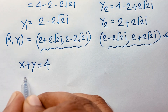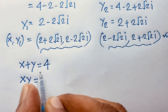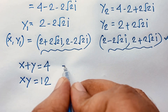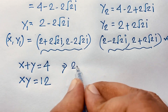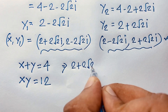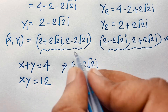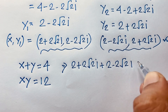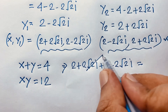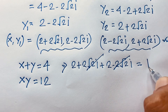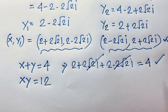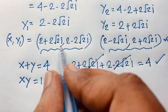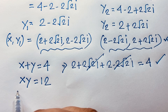Let's verify: checking x plus y equals 4. Taking x equals 2 plus 2√2·i and y equals 2 minus 2√2·i: the imaginary parts cancel, and 2 plus 2 equals 4. Left hand side equals right hand side, so the first equation is satisfied.